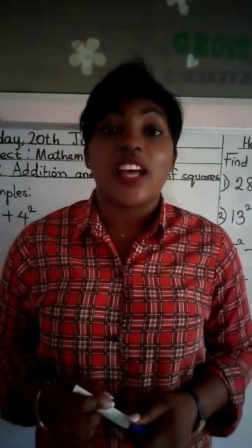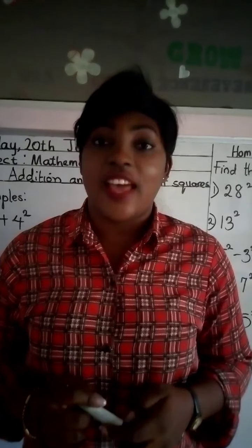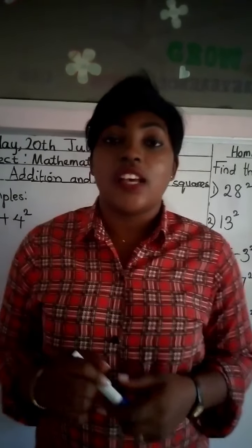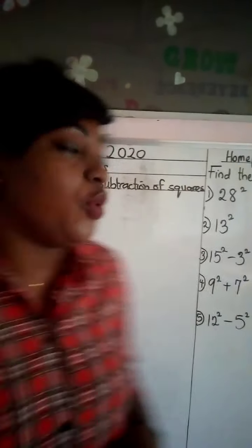Remember, the last time we talked about square of numbers. Now I said square of a number is that number multiplied by itself. Okay, let's move over to the board.